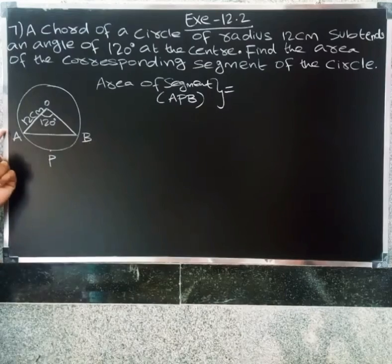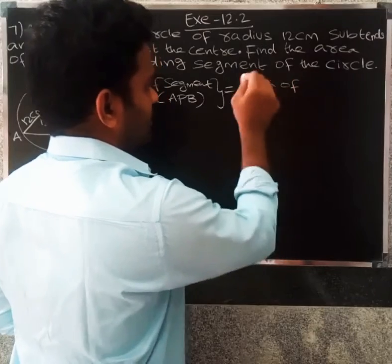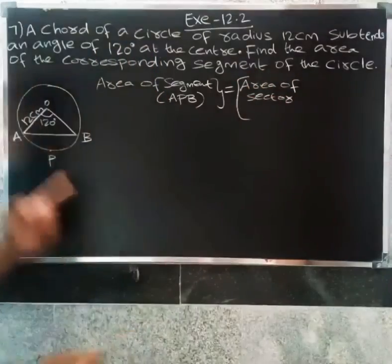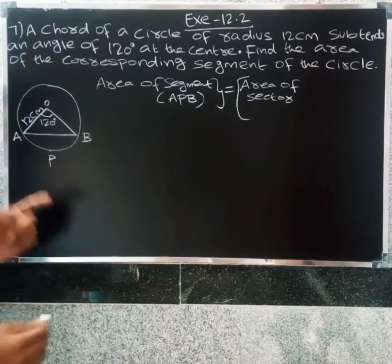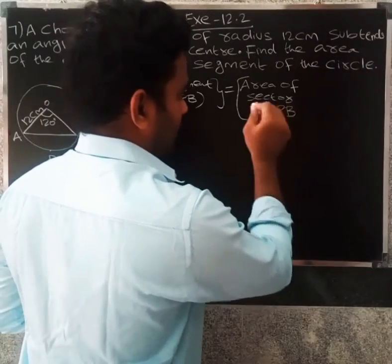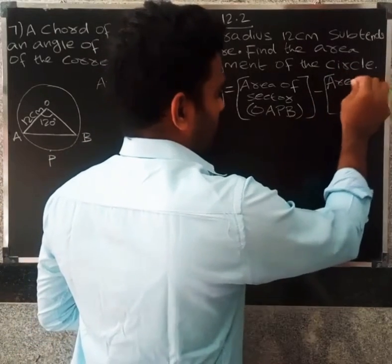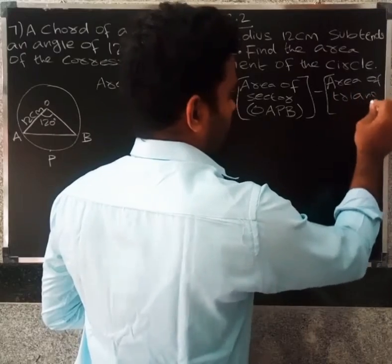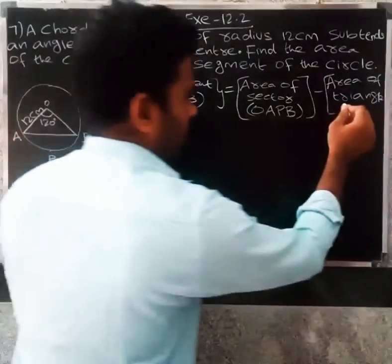So the area of a segment formula breaks down as: area of sector OAB minus area of triangle OAB.